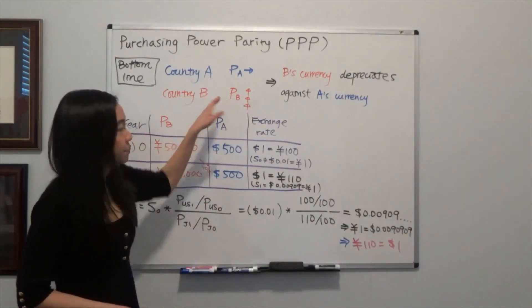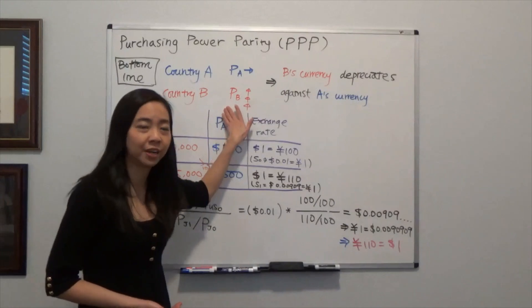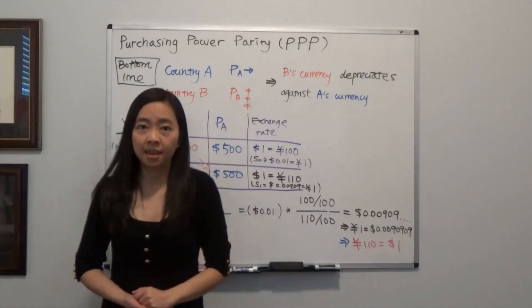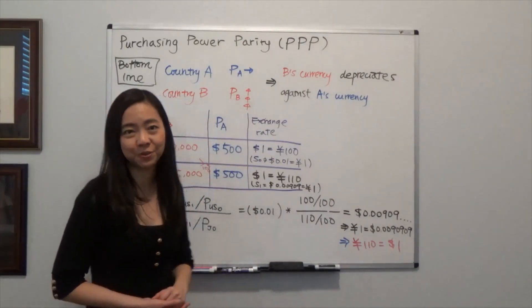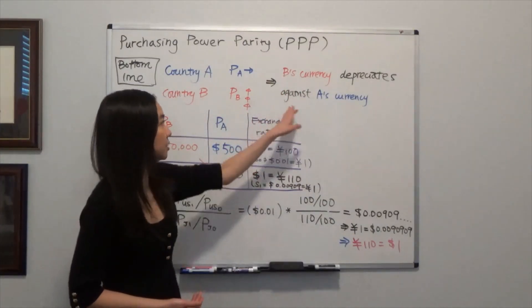But country B, because its government prints more money, has a higher inflation rate than country A. Then purchasing power parity tells you that country B's currency should depreciate against country A's currency.